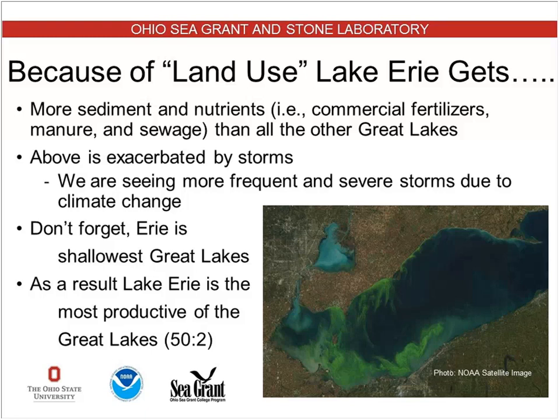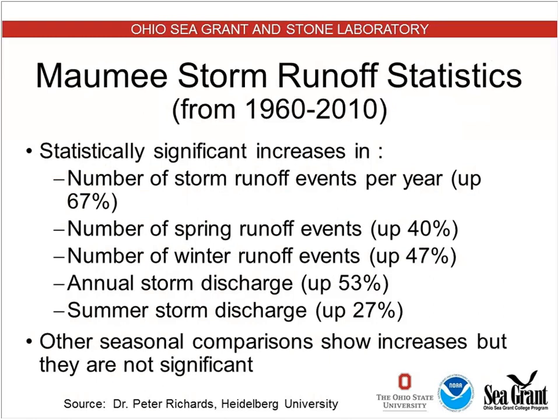Taking HABs and nutrient loading in the context of climate change: we're seeing an increase in the volume of water dropped in rain events and the frequency of these rain events. The number of storm runoff events per year is up about 67% from 1960 to 2010. More importantly, the number of spring runoff events is up 40%. This is critically important because it's the spring period that is responsible for delivering the nutrients that ultimately drive these blooms. The annual storm discharge is up 53%.